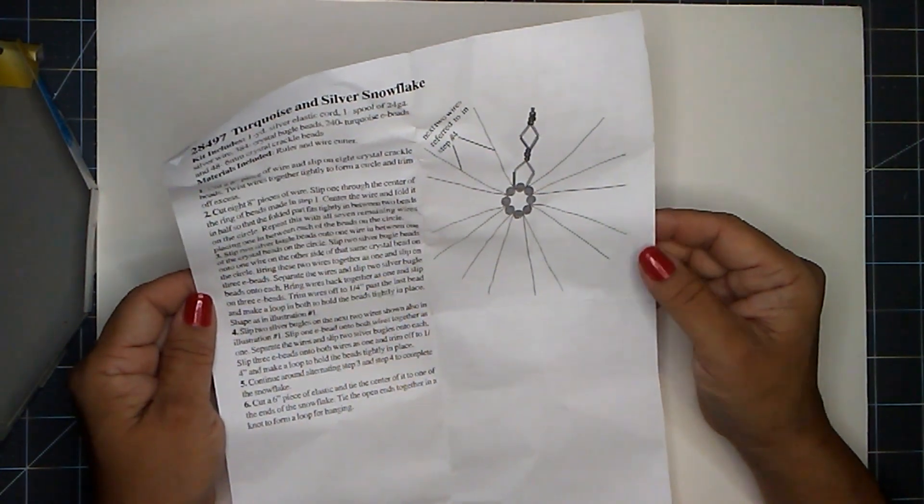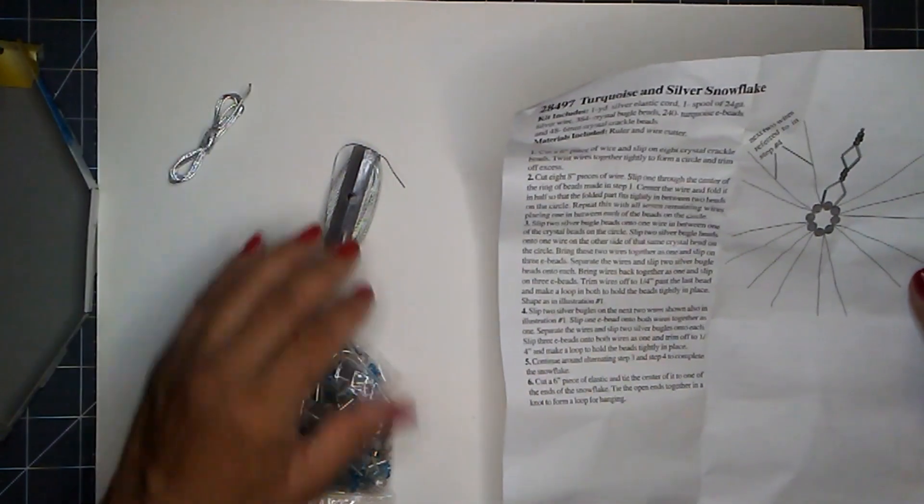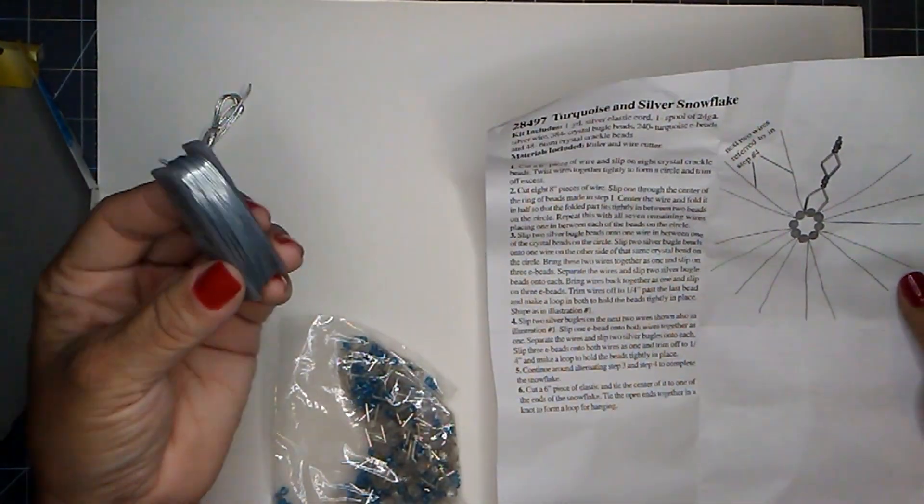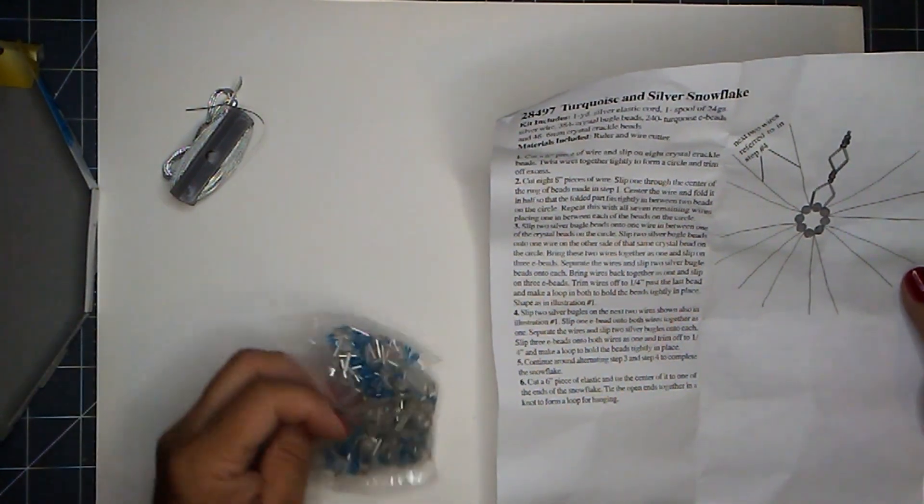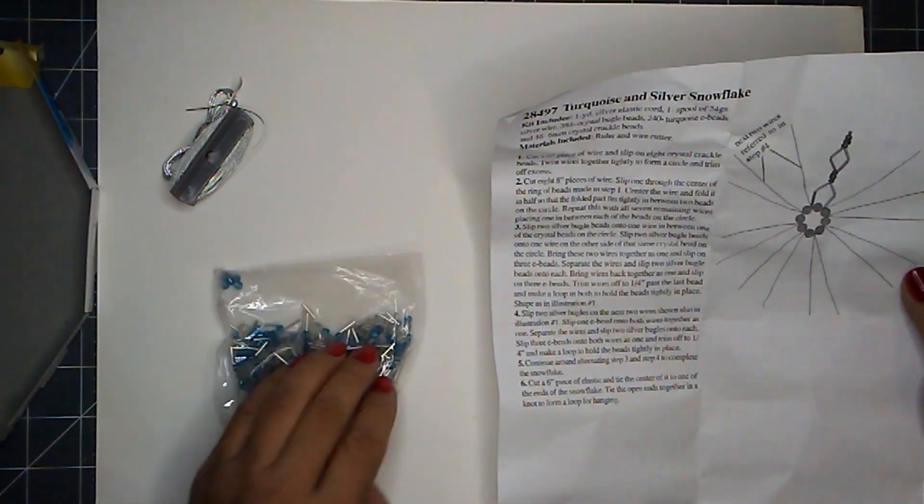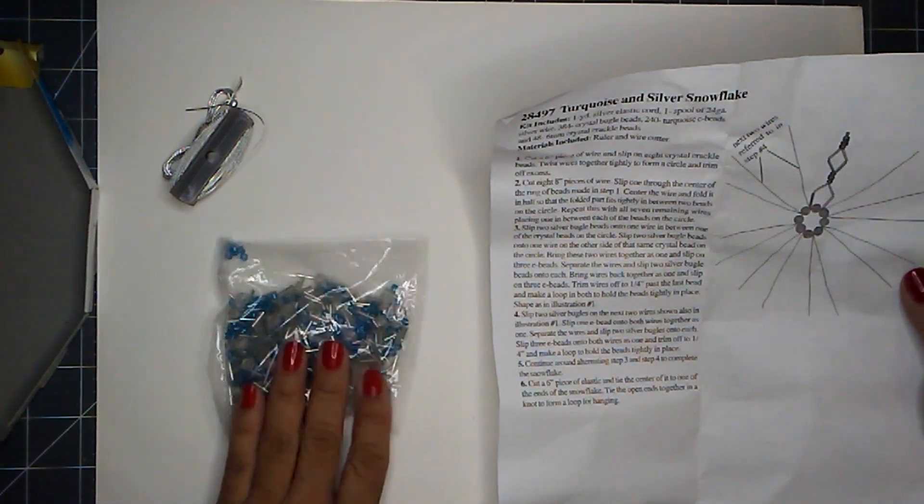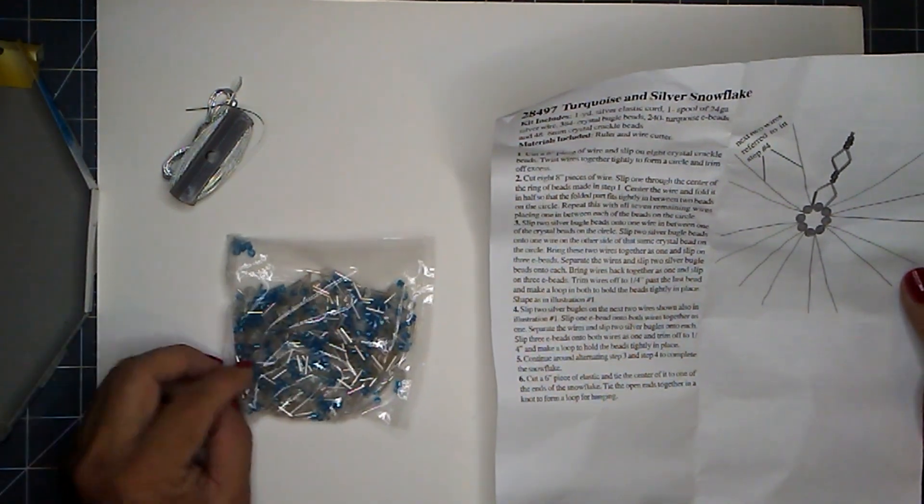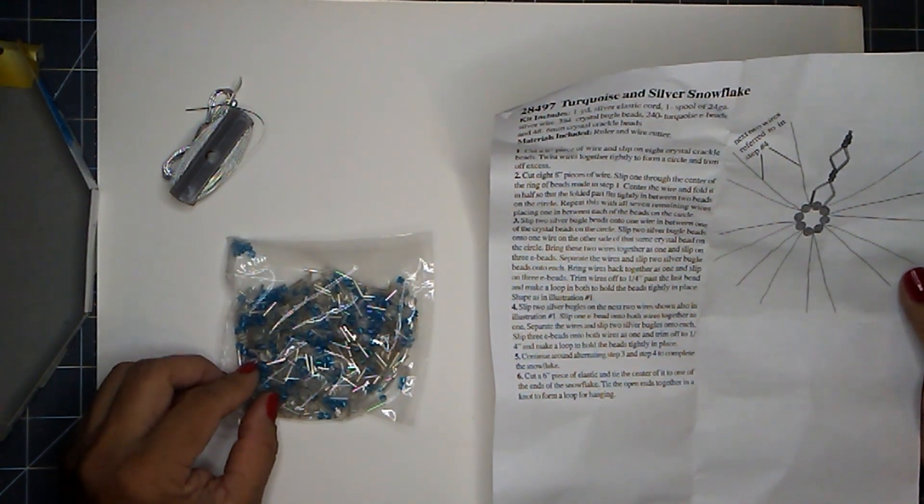Kit includes one yard silver elastic cord, one spool of 24 gauge silver wire, 384 crystal bugle beads, 240 turquoise beads, and 48 6 millimeter crystal cracker beads.